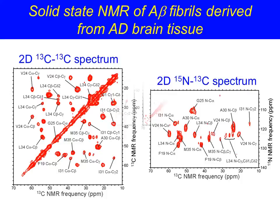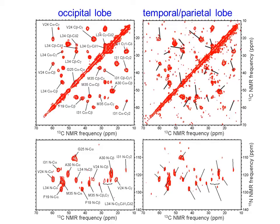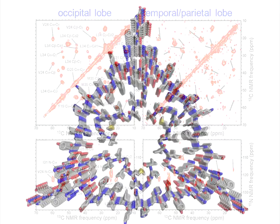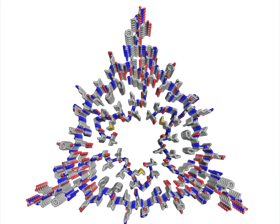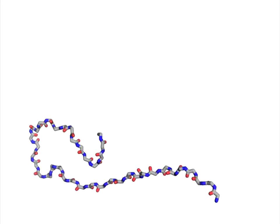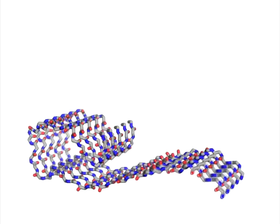Fibers derived from two different brain regions had nearly identical solid-state NMR spectra. A full structural model for brain-derived A-beta fibrils depends on a variety of measurements. From solid-state NMR data, we find that the A-beta peptide adopts a cotter pin-like backbone conformation in the fibrils, and that A-beta molecules line up in parallel along the fibril growth axis, forming what's called an in-register parallel cross-beta motif.